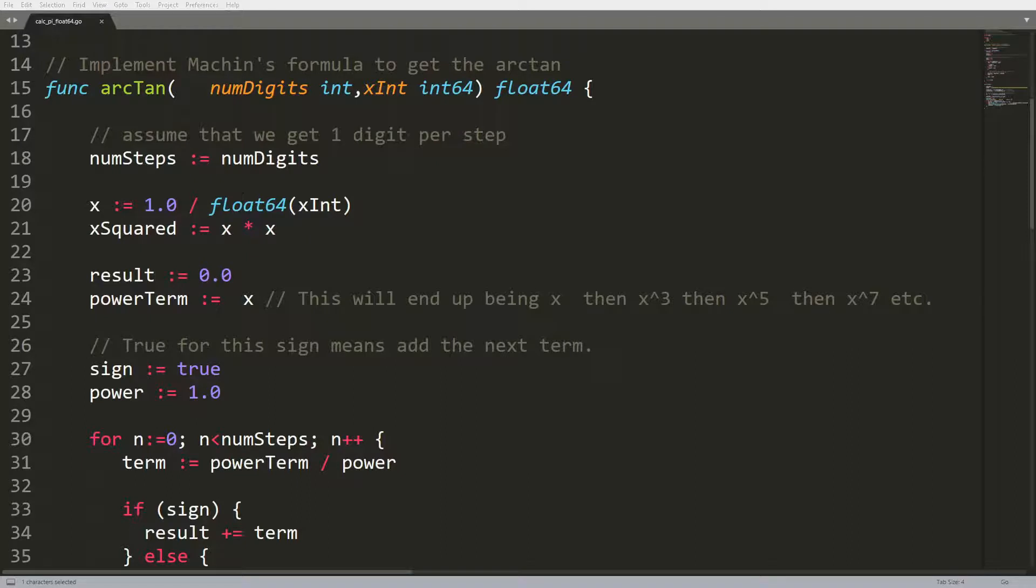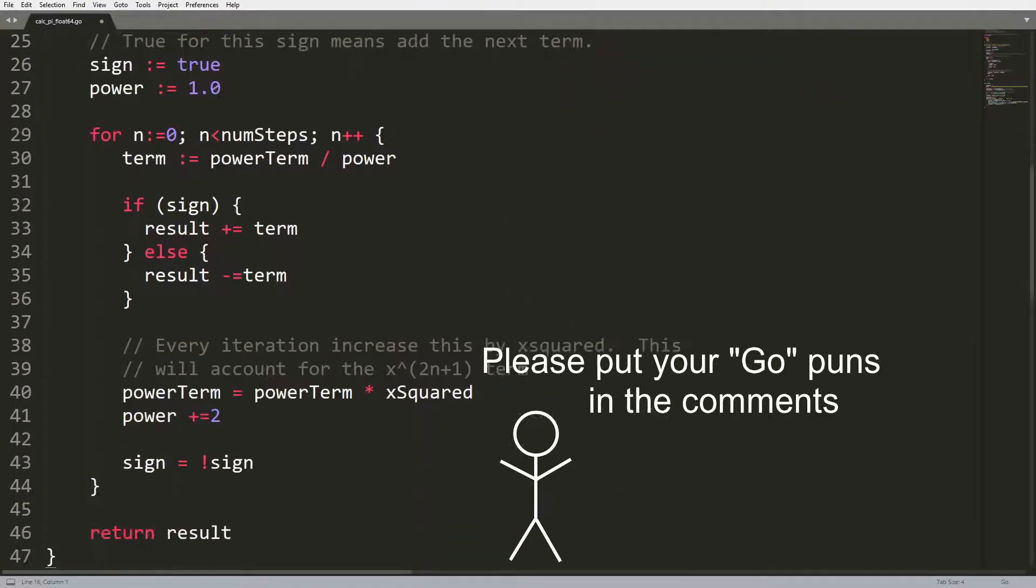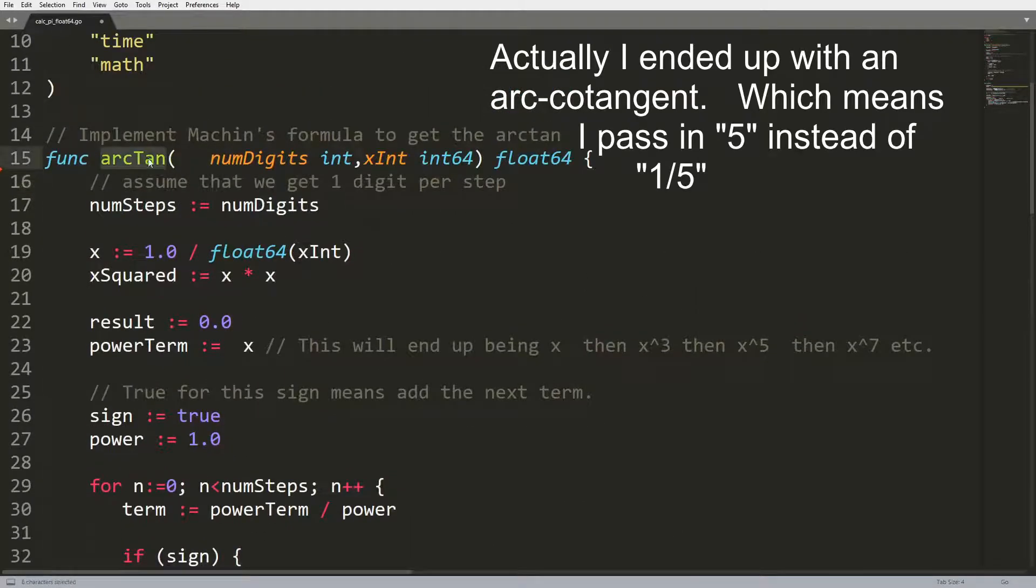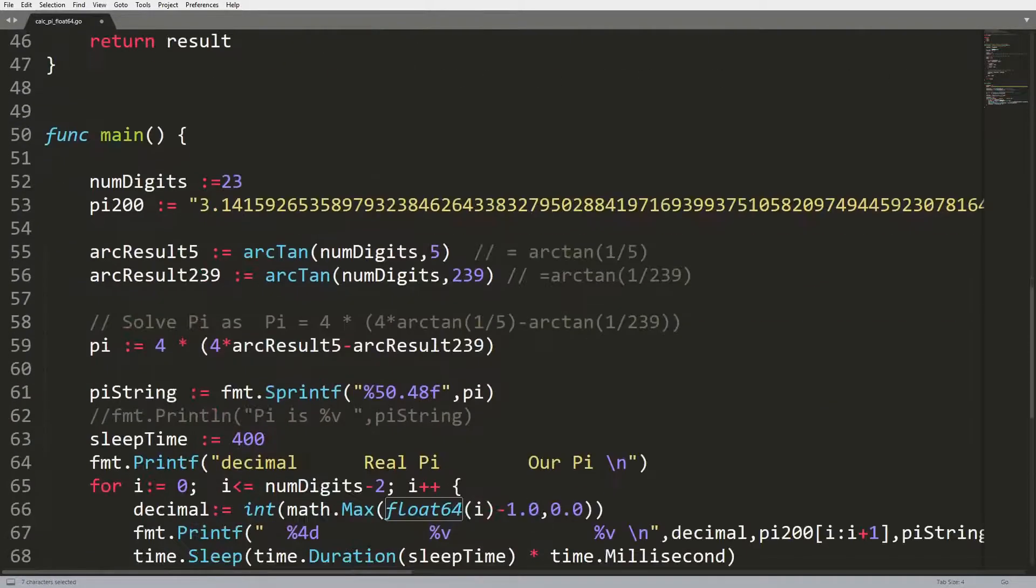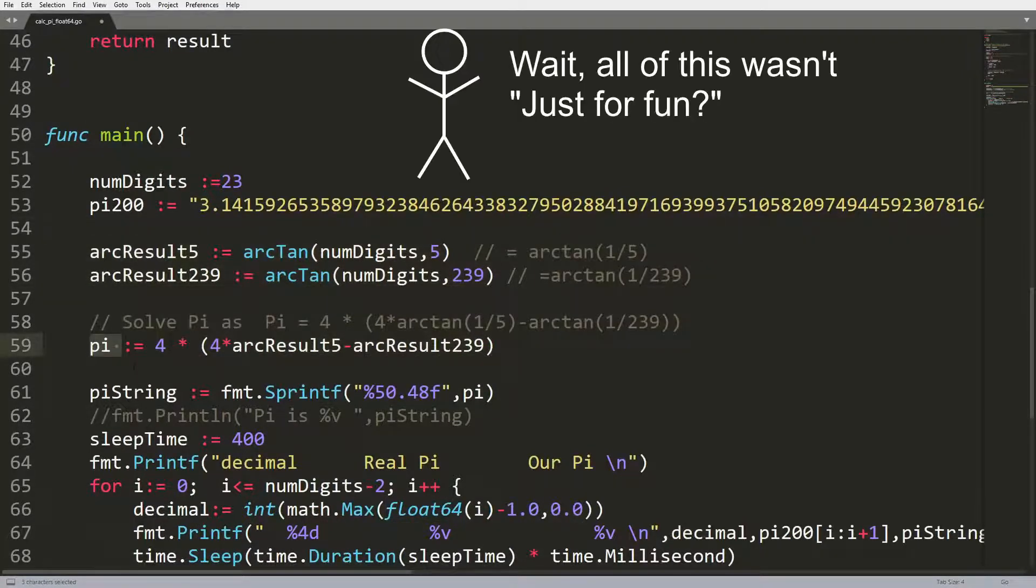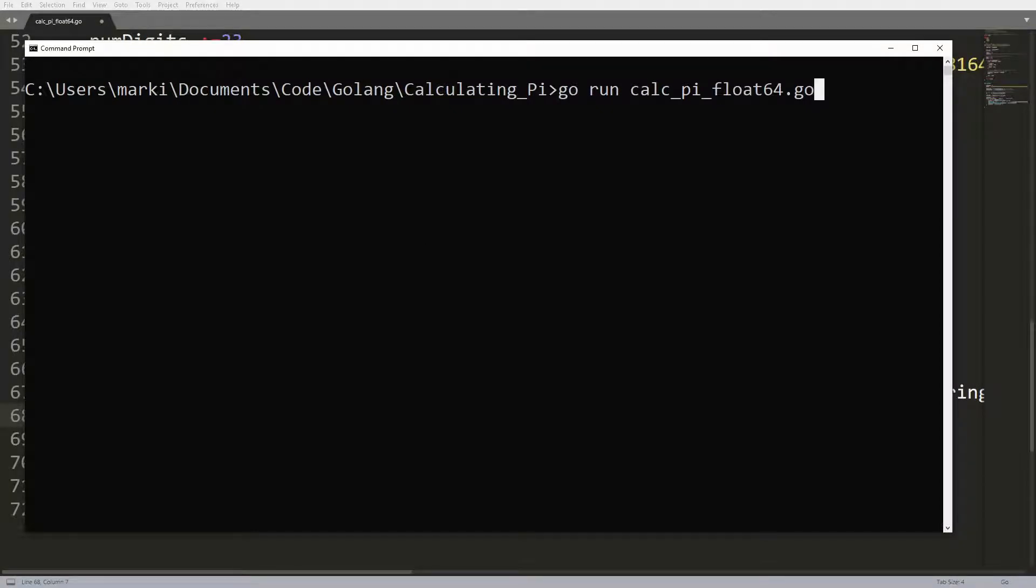Alright, this is the program that I wrote to use Macken's equation to calculate pi. It's pretty short, only about 40 to 50 lines of actual code, plus some comments, empty lines, and fluff. The programming language that I used was go, not for any particular reason other than it's a language I'm trying to get better at. How it works is that I have a function to calculate the arctangent of a number and return a float 64 value. Then I have a section that calls that arctangent function for 1 fifth and 1 239th and sums those values with the appropriate ratios. Just for fun, I have also hard-coded pi to 200 digits that I pulled off the internet, and I have the program set up to print out the pi that we calculate versus the real pi one digit at a time. So let's do that.